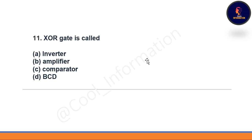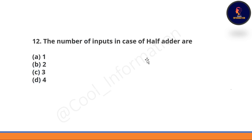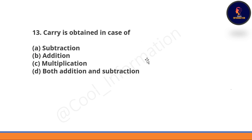Next question: XOR gate is also called — option A: inverter, option B: amplifier, option C: comparator, option D: BCD. The correct option is option A — XOR gate is also known as inverter. Next question: The number of inputs in case of a half adder are — 1, 2, 3, or 4. Option B is correct — the number of inputs in a half adder is 2. Next question: Carry is obtained in case of — subtraction, addition, multiplication, or both. The correct option is option B — carry is obtained in case of addition only.